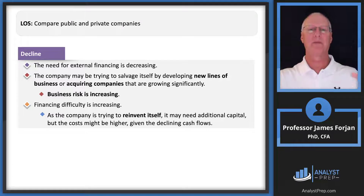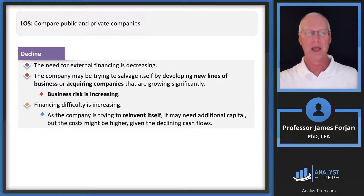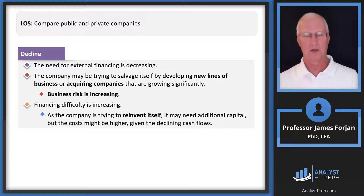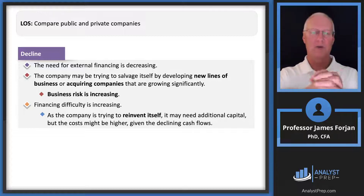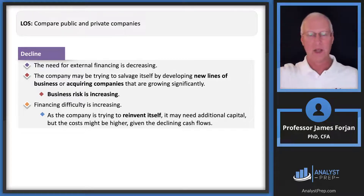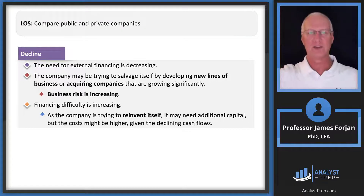When a company gets mature and faces competition leading to decline, it will look for new product lines or start acquiring other companies — increasing business risk again. The slide shows 'reinvent itself' at the bottom. Think of the life cycle as: tiny, grow, shrink, and then hopefully an effective executive team and board of directors means that decline period is very brief.